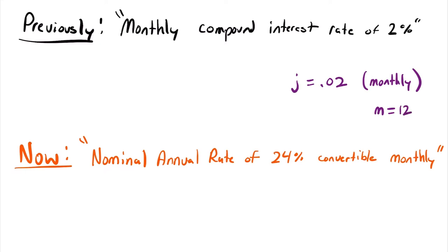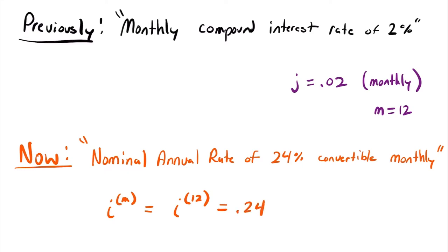When we are given a nominal interest rate, it looks like this: a nominal annual rate of 24% convertible monthly. Our nominal rate notation is i with m in parentheses — that's not an exponent, it's just telling us how often that rate is compounded. So in this case it's i^(12), because it is a monthly rate, and the actual rate is equal to 0.24.